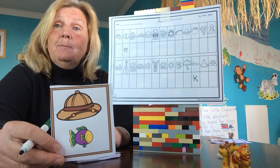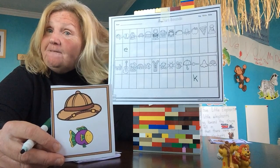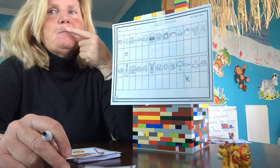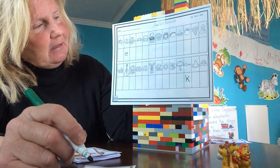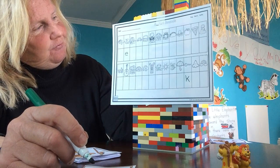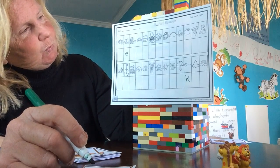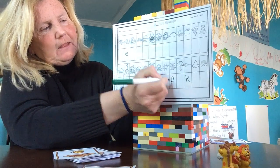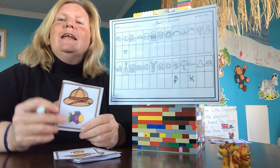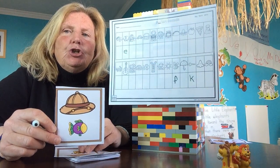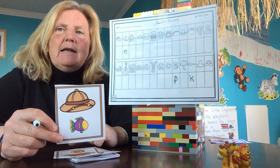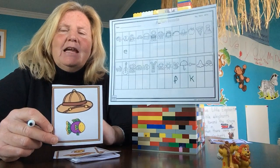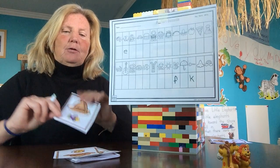Good job — let's hear it everybody: fish! What does fish start with? Perfect — F. Let's find our fish and put an F there. Fish is another tricky one — it ends with an SH sound. We call that a blend. You're going to learn about blends next year in kindergarten. SH makes the SH sound.